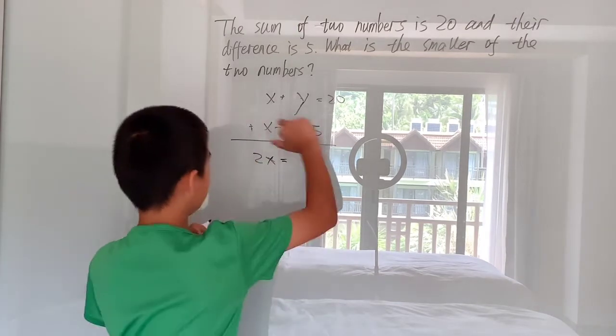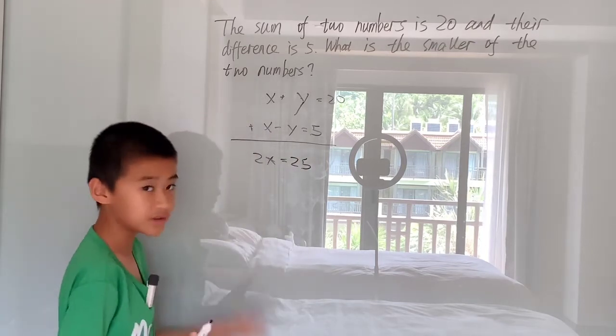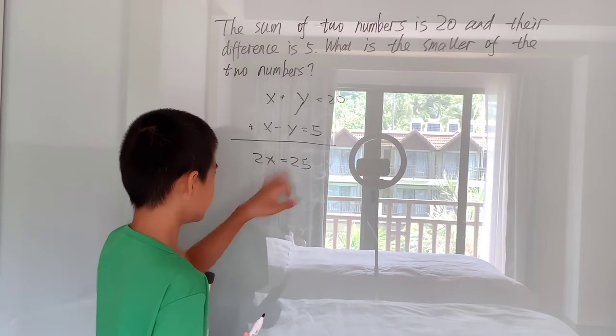So now instead of two variables, I'll just have one variable and that's solvable, right? One variable and one equation. So 2x equals 25.